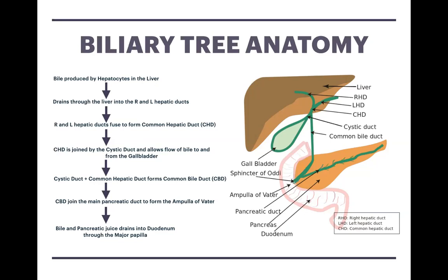The common bile duct has a long passage down towards the duodenum, and towards the end of its passage, it fuses with the major pancreatic duct, which comes from the pancreas, to then drain directly into the duodenum. When they fuse, they form what is known as the ampulla of Vater, and they drain directly into the major papilla located in the duodenum. This fusion allows us to drain both bile and pancreatic juices directly into the gut and therefore digest food.